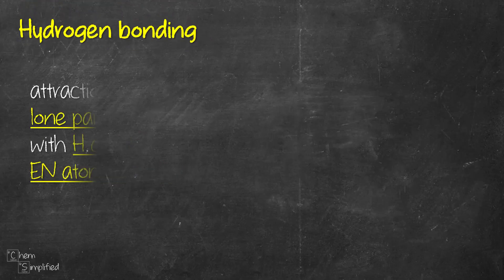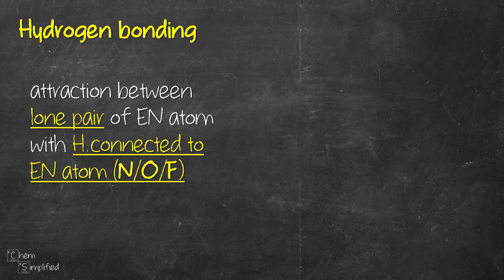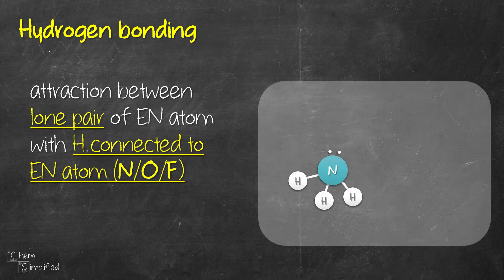When a molecule has either nitrogen, oxygen or fluorine that is directly connected to hydrogen, it can form hydrogen bonding with another molecule. When we take ammonia for example, it's NH3. It has nitrogen, which is directly connected to hydrogens. The lone pair on nitrogen from the first ammonia is attracted to the hydrogen of another ammonia. That's hydrogen bonding.